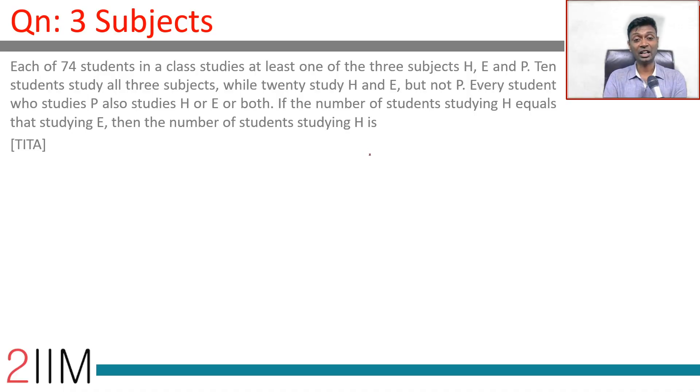Each of 74 students in a class studies at least one of the three subjects H, E and P. I straight away know that is a Venn diagram question.